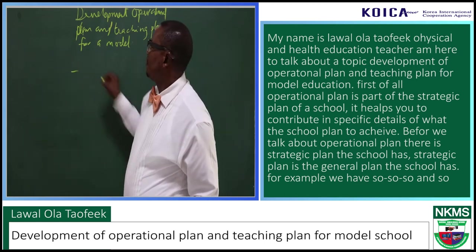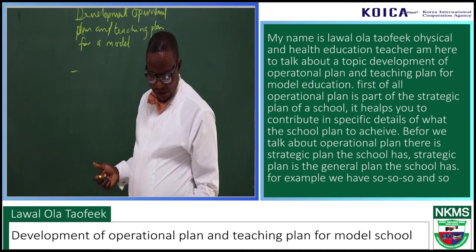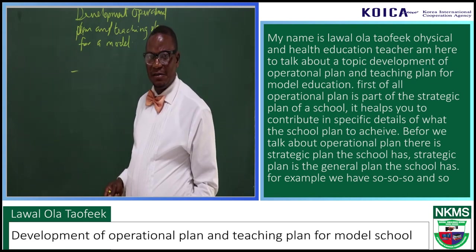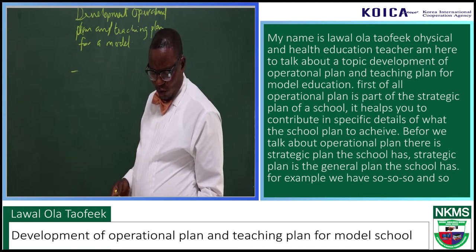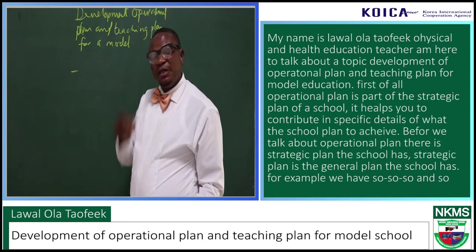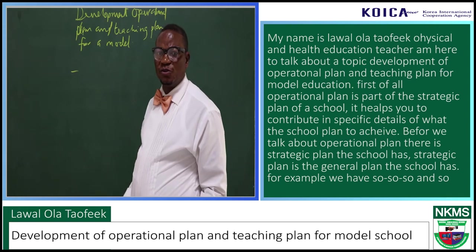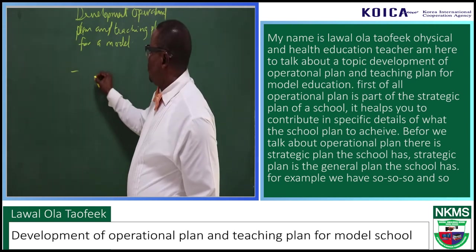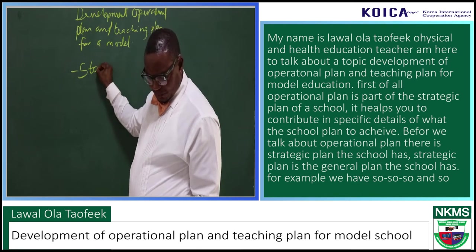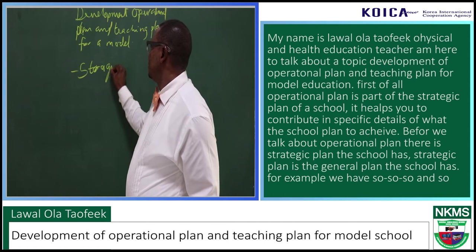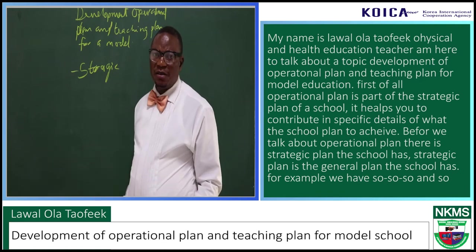First of all, an operational manual is part of the strategic plan of a school. It helps you to contribute specific details on how to achieve what the school plans to achieve. Before we talk about operational plan, strategic plan comes in. Strategic plan is the general plan the school has.